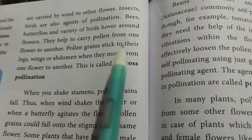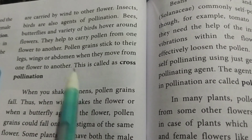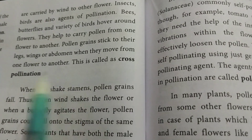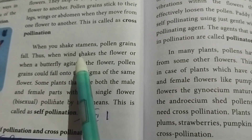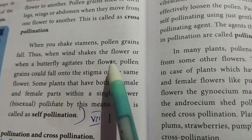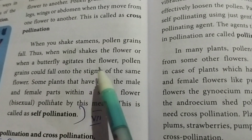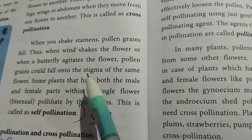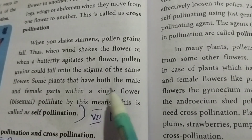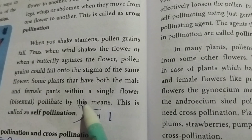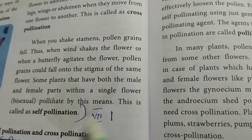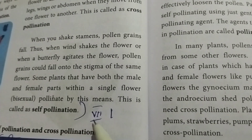Pollen grains stick to their legs, wings or abdomen when they move from one flower to another. This is called cross-pollination. When wind shakes the flower or when a butterfly agitates the flower, pollen grains could fall on the stigma of the same flower. Plants that have both male and female parts within a single flower are bisexual and pollinate by this means — this is called self-pollination.